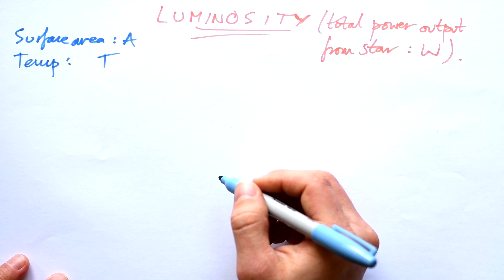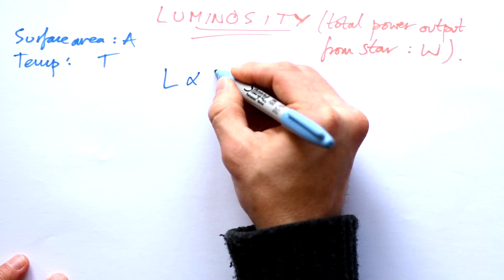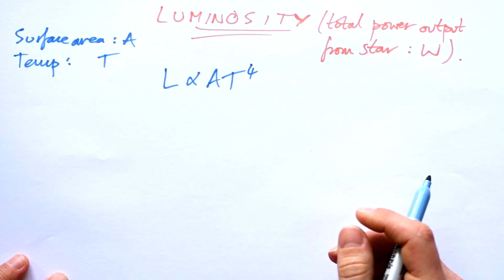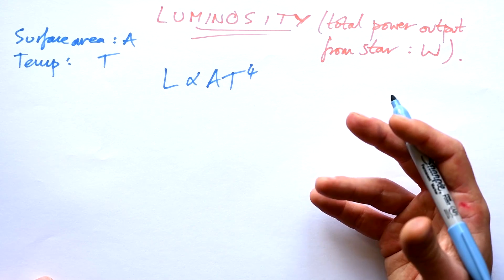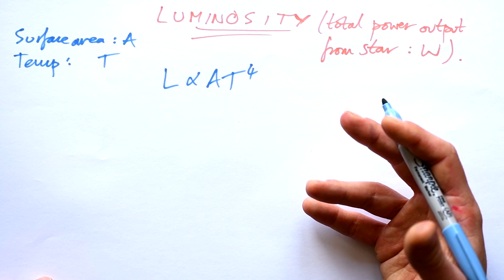So how is luminosity related to these? Well, luminosity is proportional to the area, but it's also proportional to temperature to the power of four. So if you have two stars at the same size, but one is double the temperature, then that means that it's going to have 16 times the luminosity.